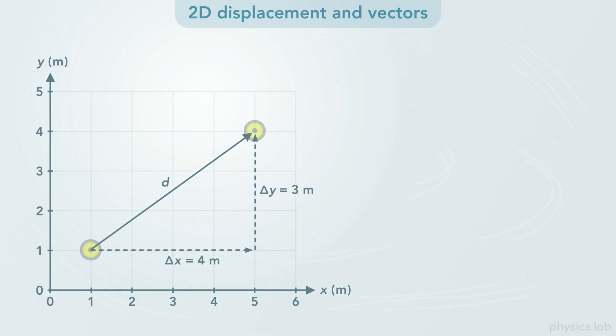In this example, both components are positive. But what if the stone moves from a position of 1,4 to a position of 5,1?